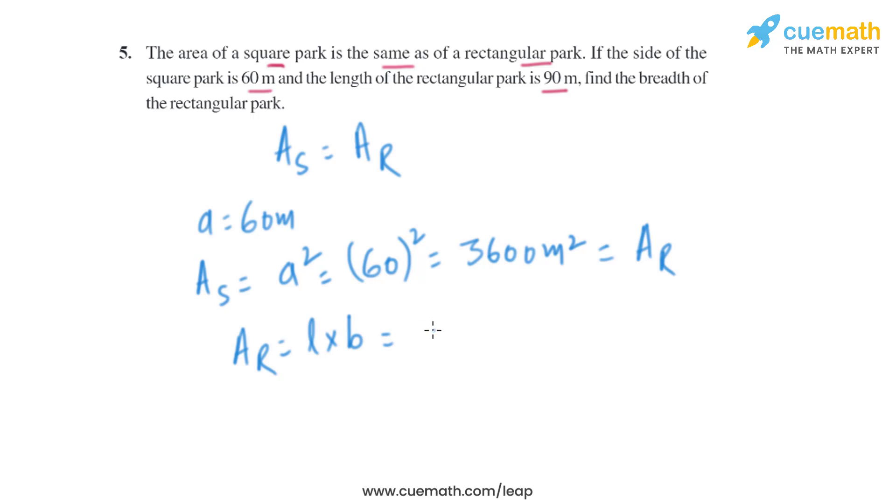We know the area is 3600 square meters, and the length is 90 meters. We have to find the breadth. So we can find breadth easily: breadth equals 3600 divided by 90.